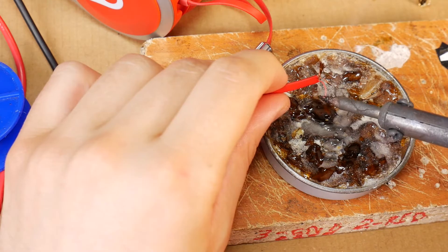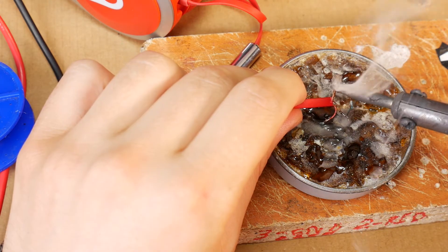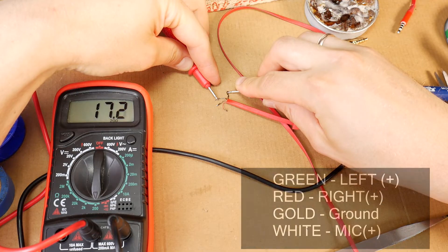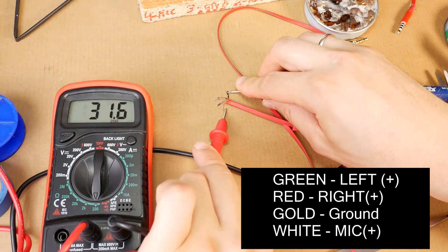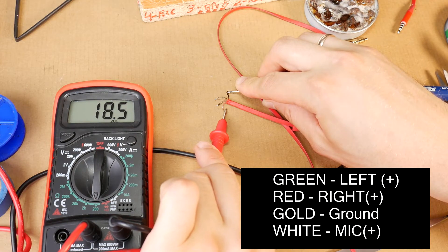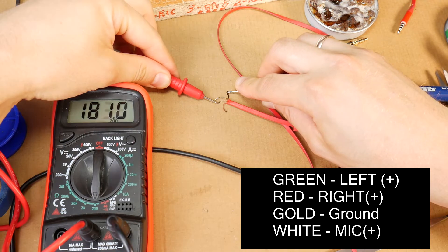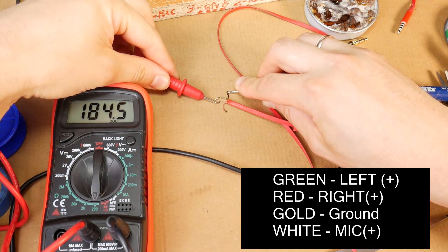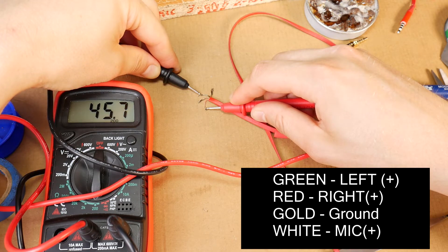Tin all wires so they can be soldered to the jack more easily and qualitatively. Then with a multimeter, find out which wire is left, right channels, which is mic, and which wire is ground. If you don't know how to use a multimeter, watch my last Tech Screw School video on how to use a multimeter.